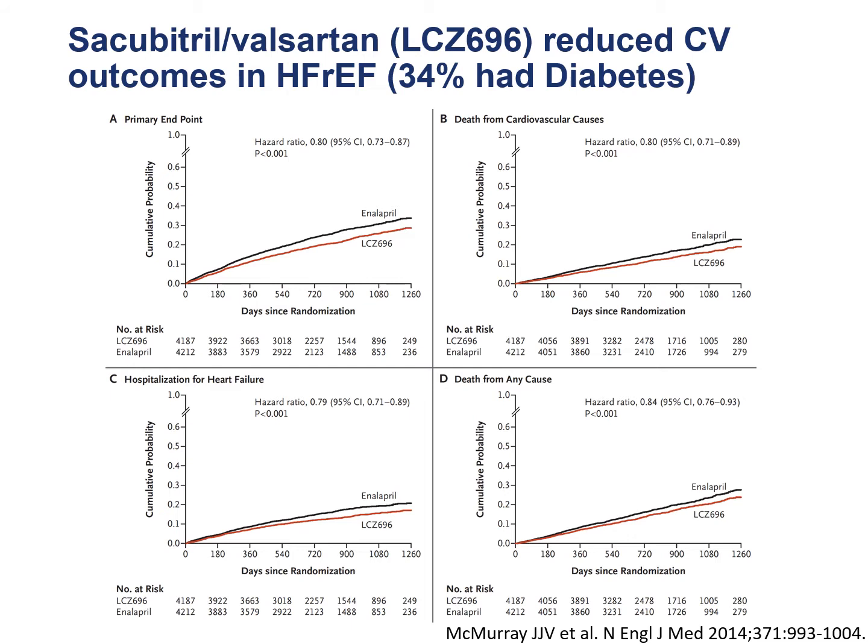Data from the Paradigm HF trial involved approximately 8,300 individuals with heart failure with reduced ejection fraction on evidence-based therapies. Patients were randomized to receive either the ACE inhibitor enalapril or the combined neprilysin inhibitor/angiotensin II receptor blocker Sacubitril-Valsartan (LCZ-696). The combination therapy with LCZ-696 significantly reduced major adverse cardiac events, cardiovascular death, heart failure hospitalization, and all-cause mortality. Importantly, 34% of patients had type 2 diabetes, and similar benefits were observed in that subgroup. As a result, this therapy is recommended for heart failure patients with reduced ejection fraction, if clinically indicated.